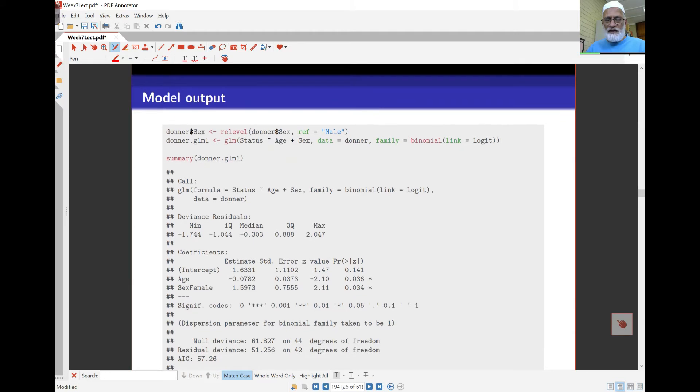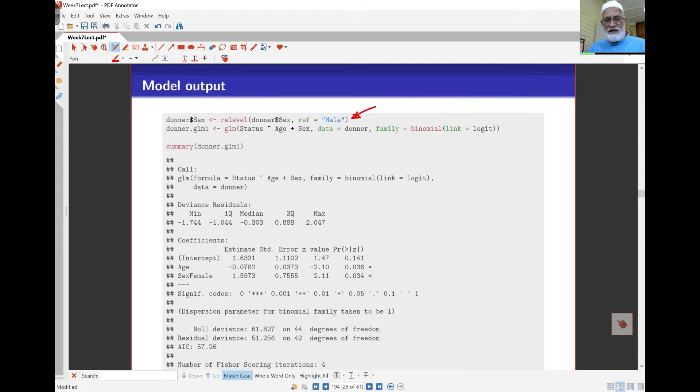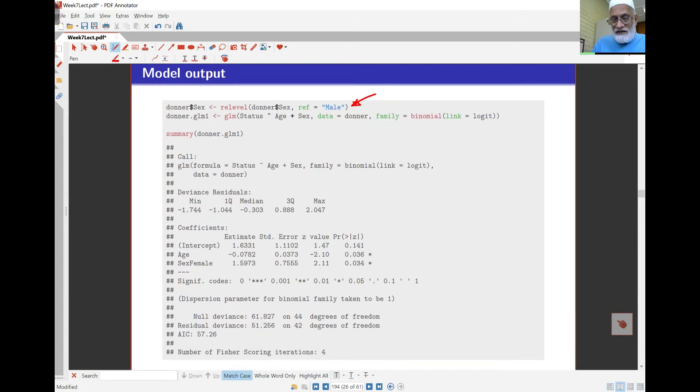The output is going to be - I'm using a command to re-level donor dot sex, re-ordering the sex so reference is male. That means female will now appear in my model and male won't. Here's my model. If you look at the output, it looks similar to the output from the linear model. Most things are similar, everything is exactly the same.